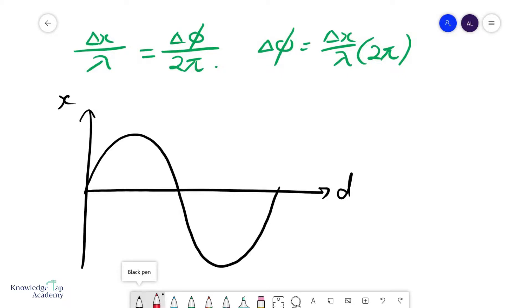is one wave. They could ask you, say, find the phase difference between this point and that point. And so what you do is you find this Δx and apply the same formula.